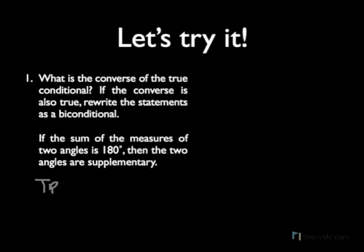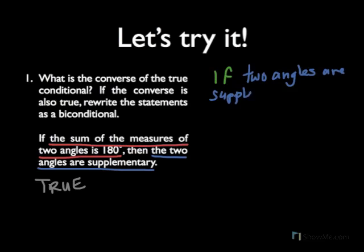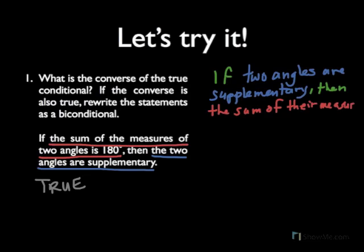Now we were already told that this is true, so all that we need to worry about is if the converse is true. So here is our hypothesis and our conclusion. So let's write our converse. If two angles are supplementary, then the sum of their measures is 180 degrees.